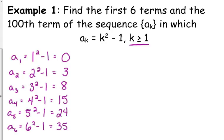We also want the 100th term. So, jumping a little bit, 100 squared minus 1. Well, 100 squared is 10,000, so minus 1 is 9,999.